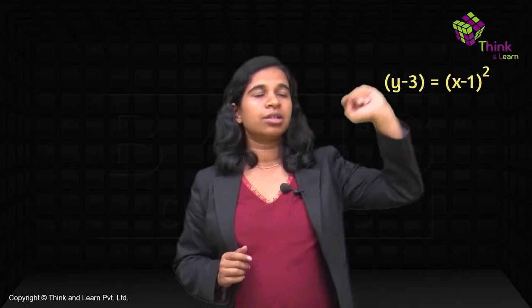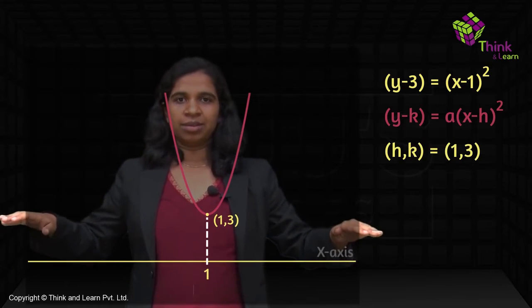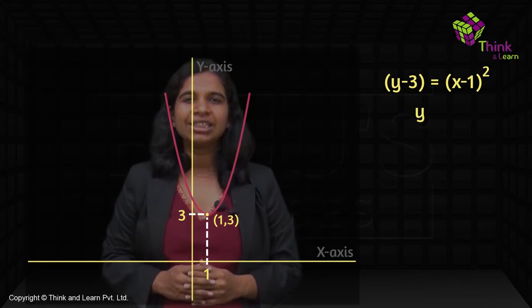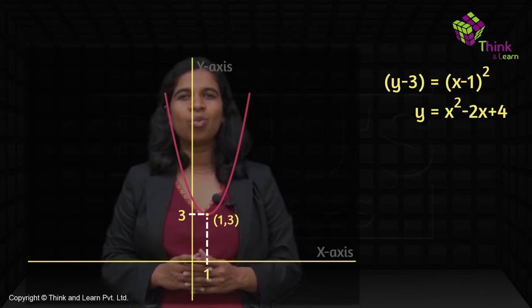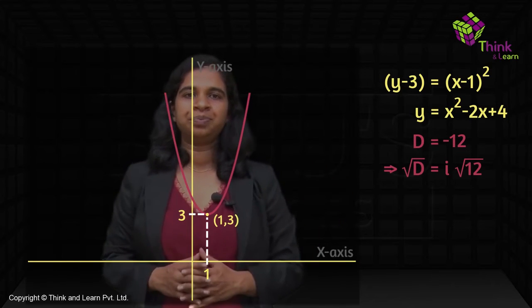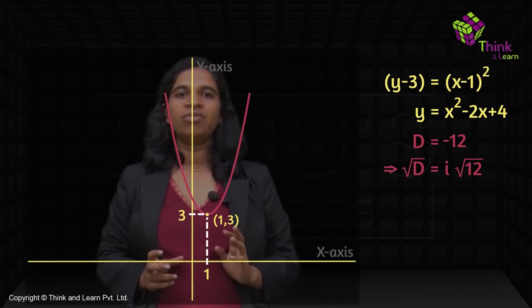Let's take an equation where D is negative: y - 3 = (x - 1)². This parabola faces upward (positive coefficient), with vertex at (1, 3), so the x-axis lies below the vertex. Expanding gives y = x² - 2x + 4. Finding D = b² - 4ac gives D = -12, so √D = i√12. This is imaginary, which is why this graph has complex roots: x = (2 ± i√12) / 2.